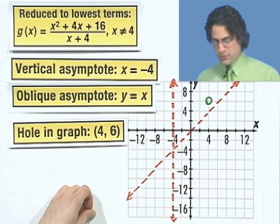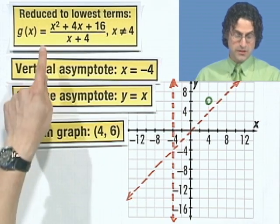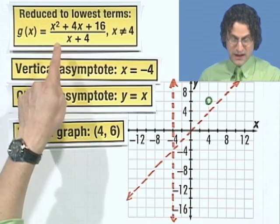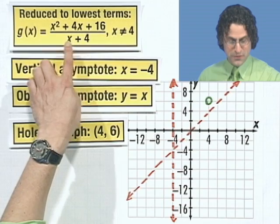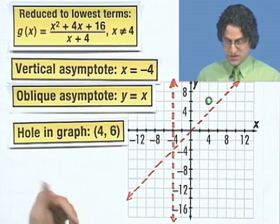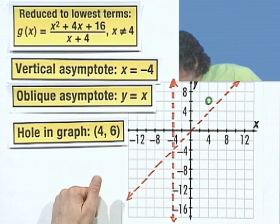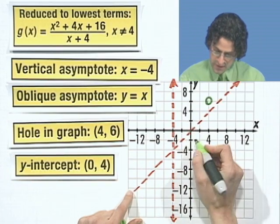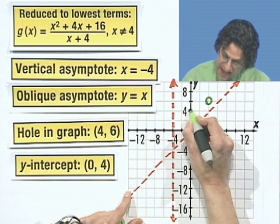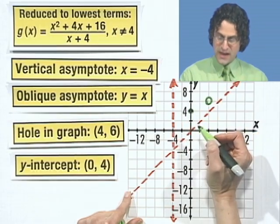So for example, if you want to plot points, how about x equals 0? x equals 0 is always an easy point. If x equals 0, that would actually be the y-intercept. This would be 0, 0, 16 over 0, 4. So 16 over 4, which is 4. So I see a y-intercept of 0, 4. So at 0, we go to 4. And that's enough for me to know that, in fact, this rational function is going to live in this wedge of the world right here. So I'm going to sketch that right in here.